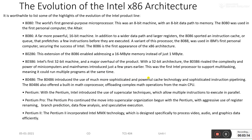The 486 introduced the use of much more sophisticated and powerful cache memory technology. Cache technology was not introduced in the 8386; it was introduced in the 486. Cache memory is very near to the CPU and is used for enabling higher speed for the CPU. Sophisticated instruction pipelines were also introduced in the 486, which were not present in earlier versions of Intel microprocessors.